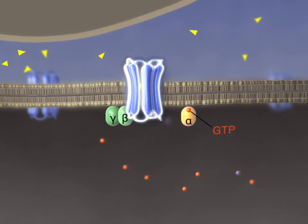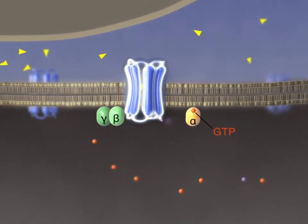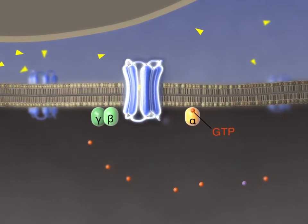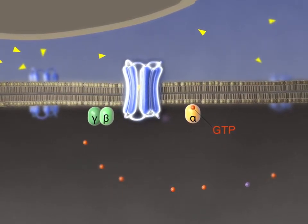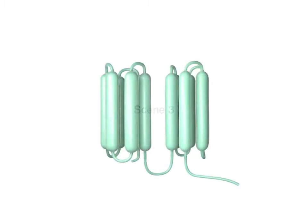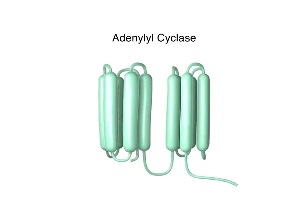The activated G-alpha-GTP then binds to its target protein to change the amount of a second messenger inside the cell. In the case of G-S, its targets are adenylyl cyclases.